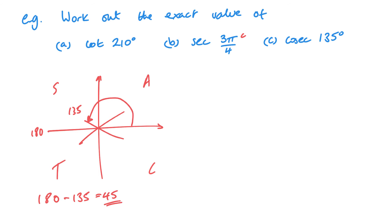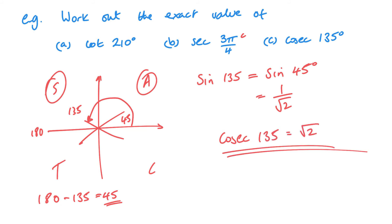So cosec is 1 over sine. So let's look at sine 135. So sine is positive in this section. So this is exactly the same as sine 45 degrees. And sine 45 degrees is 1 over root 2 using the triangle we just did with part b. That means then that cosec 135 is just root 2.